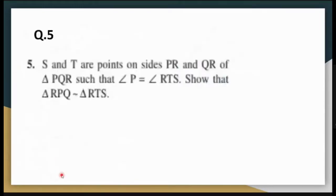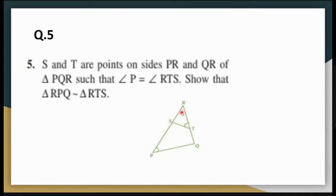The proof has been done — you can see it yourself. Question 5: angle P is given equal to angle RTS, and angle R is the common angle. So I have two equal angles. Angle R equals angle R, angle P equals angle RTS. Therefore, triangle RPQ is similar to triangle RTS by the AA rule of similarity.